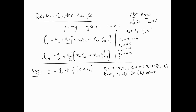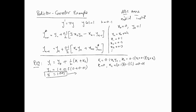Now we can calculate y1: y1 = 1 + 0.5*(k1 + k2) = 1 + 0.5*(0 + 0.01) = 1.005. This matches what we calculated before in the earlier Runge-Kutta video. This y1 = 1.005 is our starter value for the predictor-corrector method.